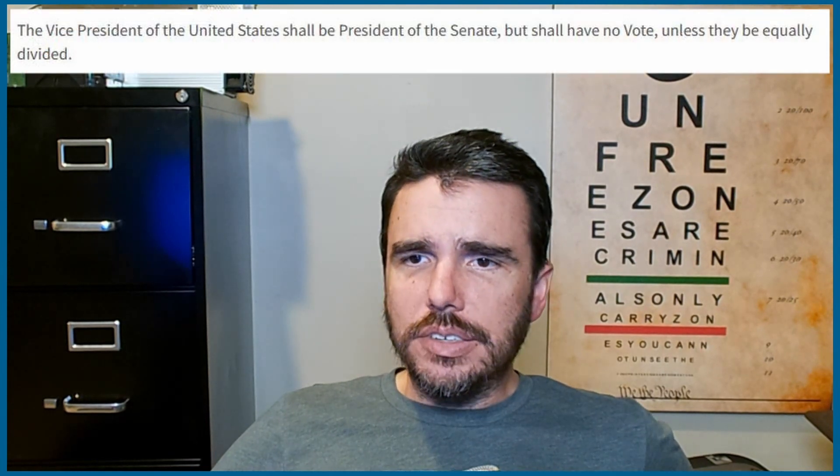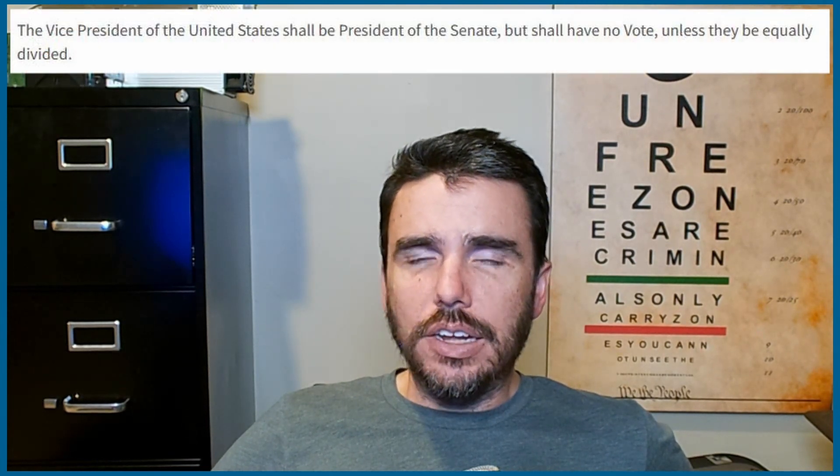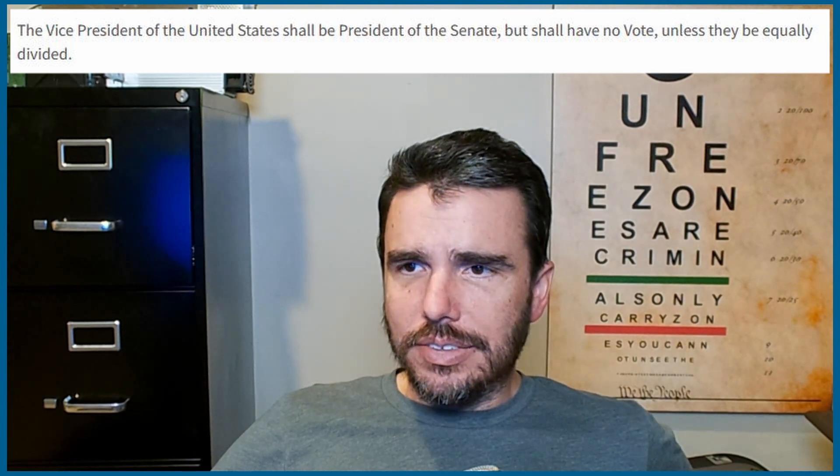The Vice President of the United States shall preside over the Senate but shall have no vote unless the Senate is equally divided. With 50 states and two senators per state, a 50-50 tie is possible, so Section Three clearly lays out that the Vice President is responsible for breaking that tie. While the office may seem ceremonial at times, in a divided Congress it could be extremely important to control.